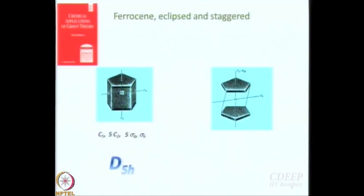Now let us talk about the other example which is a little more complicated — the staggered configuration of ruthenocene. We already talked about C5, 5C2, 5 sigma D, sigma H, and D5H. Now let us talk about the staggered configuration.